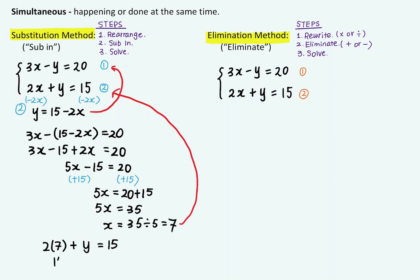2 times 7 equals 14. 14 plus y equals 15. And I can work out y is equal to 1. So using substitution method, I found that x is equal to 7 and y is equal to 1. So now let's look at the second method.